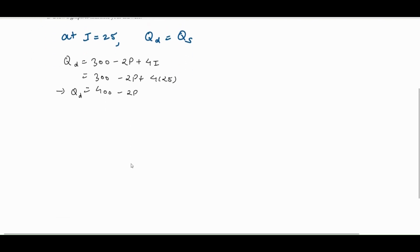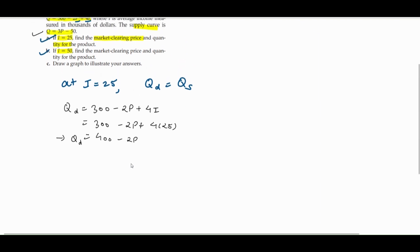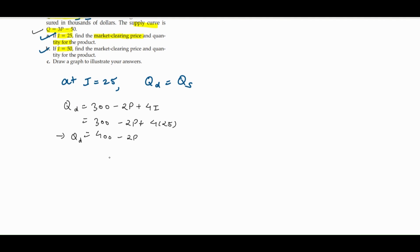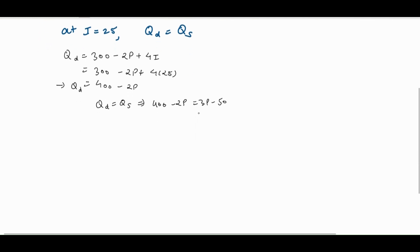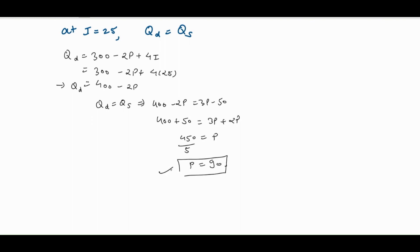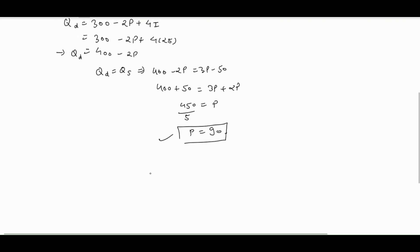Now we equate Qd equals Qs: the demand function 400 minus 2p equals the supply function 3p minus 50. Rearranging: 400 plus 50 equals 3p plus 2p, which gives 450 equals 5p. Dividing 450 by 5 gives p equals 90. So the market clearing price for part a is 90.